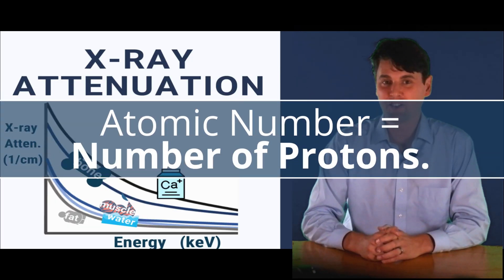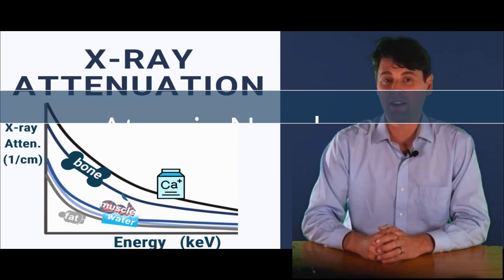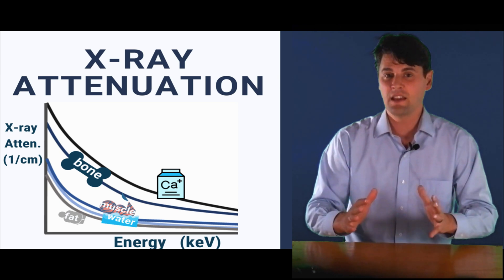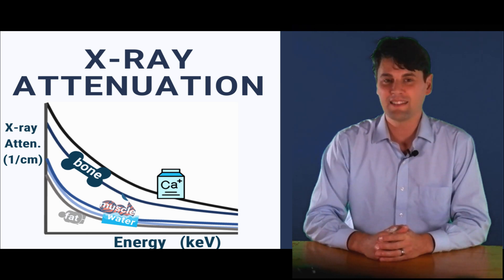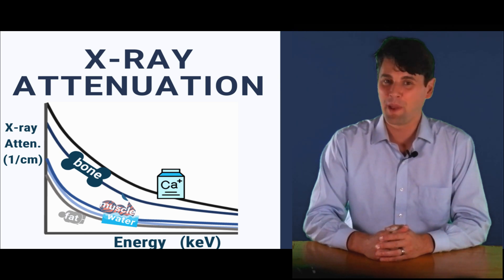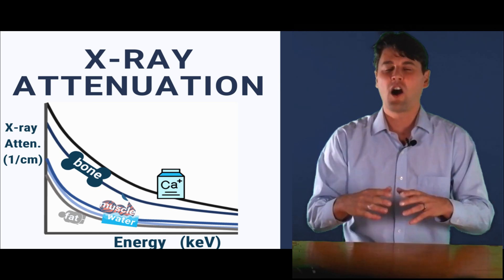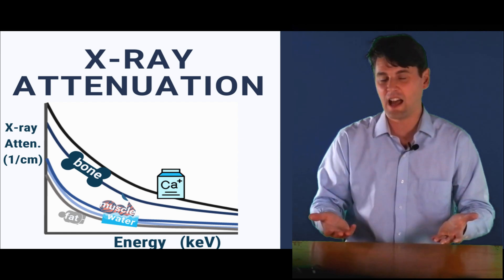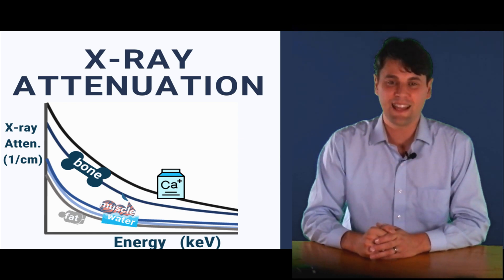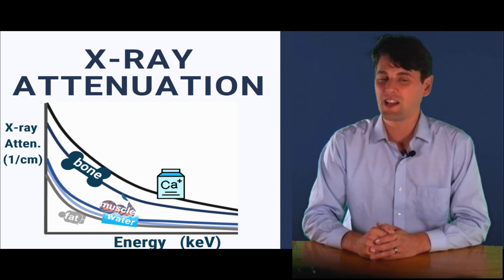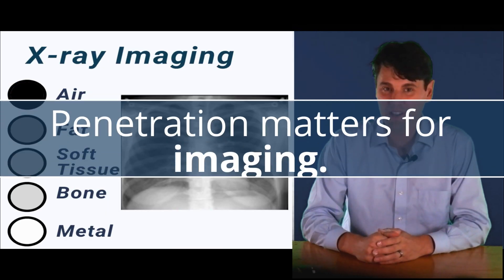As talked about in other lectures, the mass attenuation is going to be heavily dependent on the Z, or the number of protons essentially that you have. So things like bone, calcium, iodine, barium—these things are all going to have significant contrast. Even if the density was the same, the attenuation is going to be much higher for these types of materials.